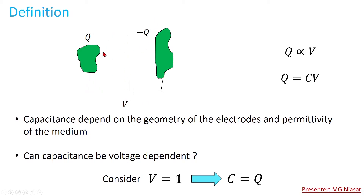There is also another scenario: if the medium between the conductors is soft and the electrodes are loose, after you apply voltage the positive and negative charges attract each other. If the force is sufficient, the electrodes can come closer together, so the geometry changes and therefore the capacitance changes. So under certain conditions the capacitance can be voltage dependent, but in normal situations we consider it not voltage dependent.